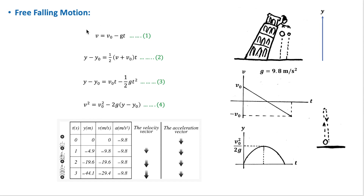These are the equations for free falling motion. The figure here shows the velocity versus time graph and the displacement versus time graph for an object thrown upward, which then falls downward to the same position. As the object moves upward, its velocity decreases until it reaches zero at the maximum height.